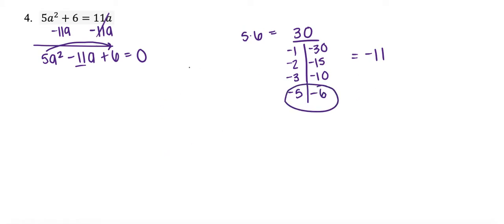Once I found those two numbers, I'm going to take those and split this middle term. So now instead of having negative 11a, I'm going to have minus 5a minus 6a, exactly the numbers that I just found over here. And then I'm just going to drop down my first and last term. So my 5a squared is just going to go down here, and my plus 6.